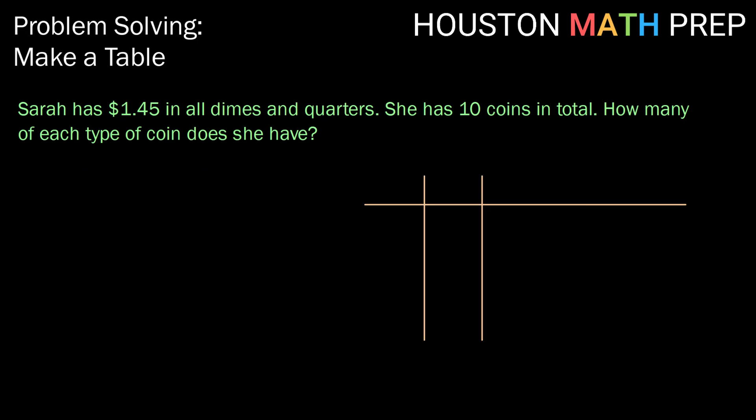Alright, so let's jump into making a table. What we might want to know here is the number of quarters that she has, the number of dimes that she has, and then with those combinations, what would that mean about the total amount of money she has?